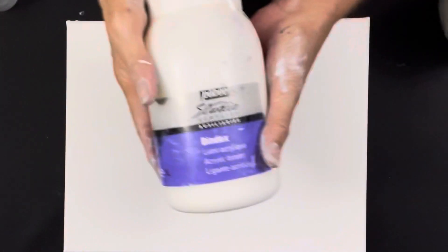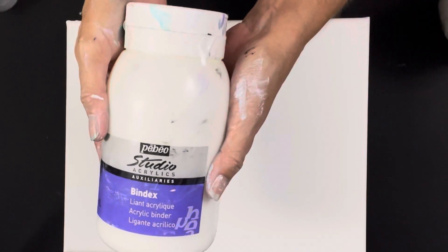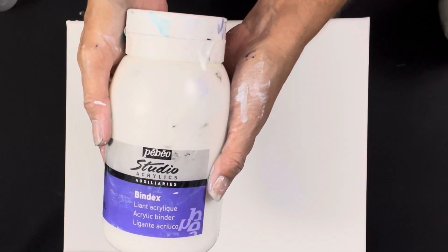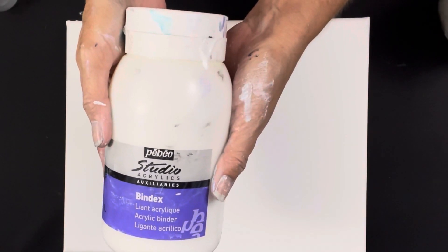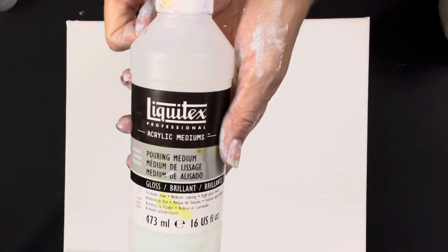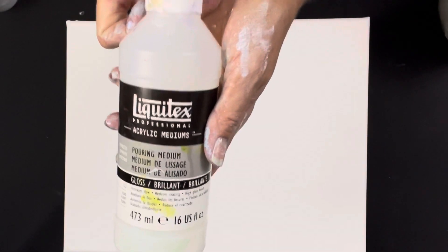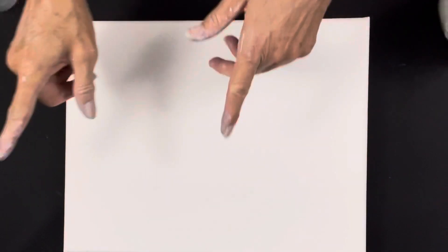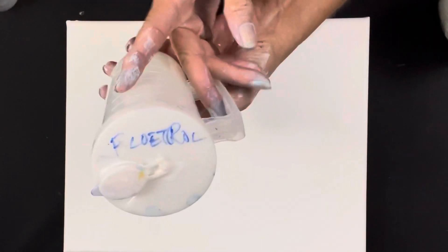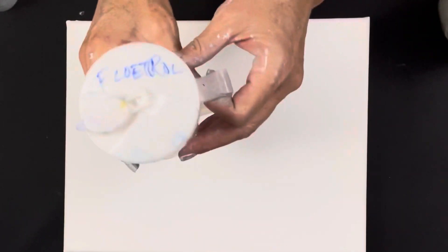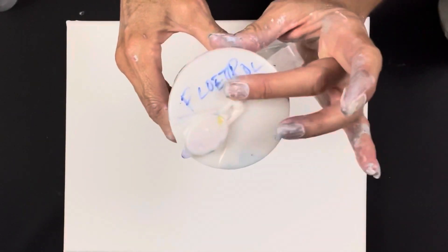That is one teaspoon. This is one teaspoon of the Pebeo Studio Acrylic Binder. I wet my pigments with one teaspoon of the Liquitex pouring medium and I have one teaspoon of the pigment. I added American Flotrol - an eighth of a cup, so that's two tablespoons.